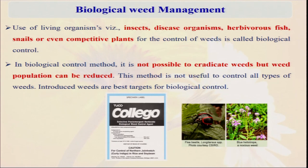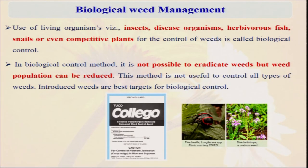Now comes biological weed control. When we are talking about biological weed control, it means we have to use some living organisms for controlling the weeds. As I told about Parthenium — Parthenium is not a problem in Mexico or other areas, because in their natural ecosystem there is one insect called Zygogramma bicolorata. They attack the Parthenium plant and can control their population. But in India, when it came there was no natural population. Use of living organisms like insects, disease organisms, herbivorous snails, or even competitive plants for the control of weed is called biological control. In biological control method it is not possible to eradicate the weed, but the population can be reduced. Our aim is not to control 100 percent of the weed — we have to reduce the weed density in such a way that it is not doing any economic damage to the crop. There may be some weed here and there, but we try to control the weed before its flowering stage and manage it so that it will not do any economic damage to the crop.